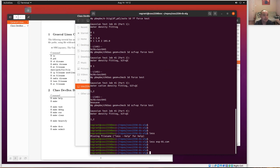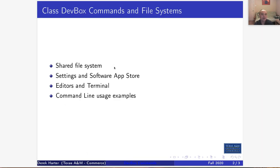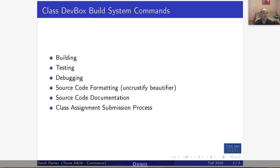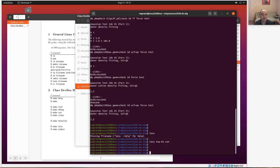The main thing I want to show in this video is the basics of building your assignments and projects from the command line. We're using a basic make build system to build your code in these dev boxes for assignments. You can do all this from the command line, and we'll also set up ways to do some of these things inside your editors. You can build your projects, test them, and debug them.